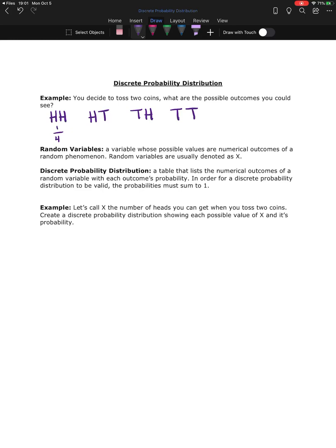So we're going to introduce random variables. Random variables are variables whose possible values are numerical outcomes of a random phenomenon. They are usually denoted with a capital X. And then a discrete probability distribution is a table that lists the numerical outcomes of a random variable with each outcome's probability.